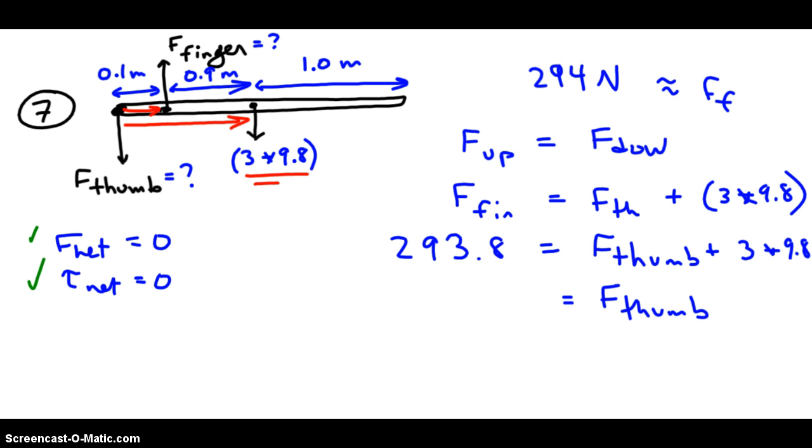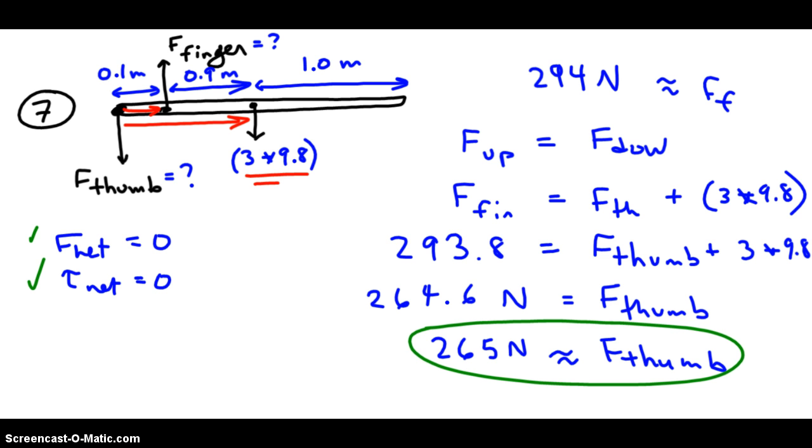And what do I get for the thumb's force? It comes out to be about 264.6 newtons. And that rounds to about 265 newtons. I round both of my answers to 3 sig figs, because all of the givens are written with 3 sig figs as well. And that's how you solve this problem.